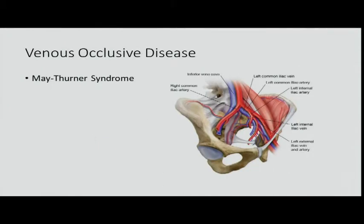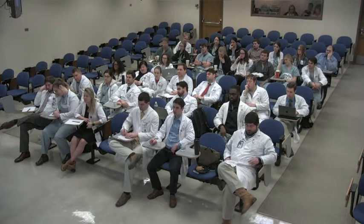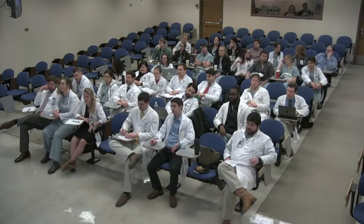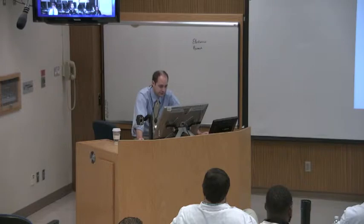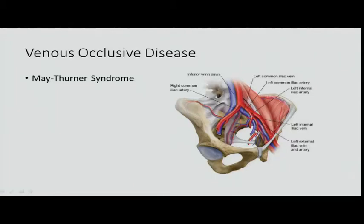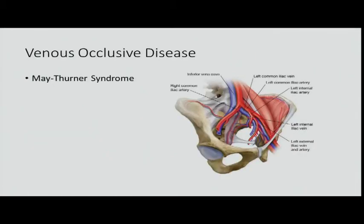May-Thürner syndrome: the right common iliac artery presses on the left common iliac vein. So if you have varicosities or venous stasis disease on the left and not the right, this is a common etiology in a young person who hasn't had a DVT. The treatment is iliac vein stenting. Post-thrombotic syndrome with occluded iliac veins can be stented back open.